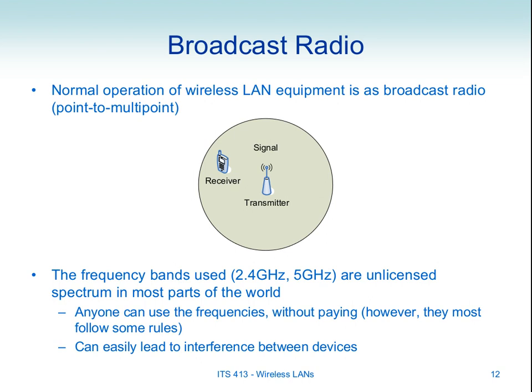Because anyone can use the unlicensed frequencies, interference between devices is easy. There's nothing to stop your neighbour from setting up their own wireless LAN that interferes with yours. A main part of the 802.11 standard is defining rules for how to cope with interference when multiple people transmit.